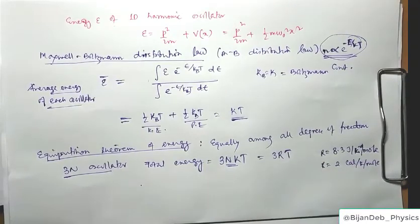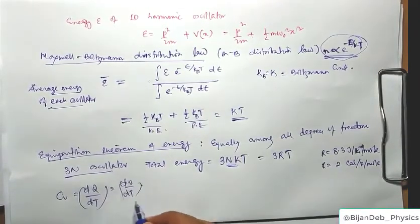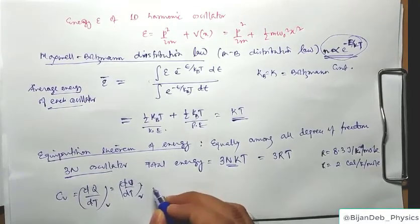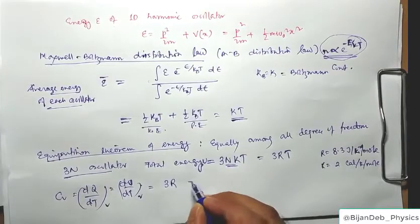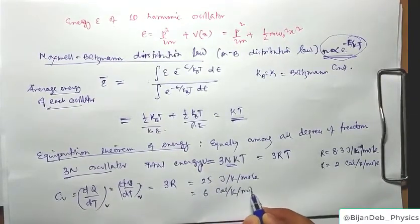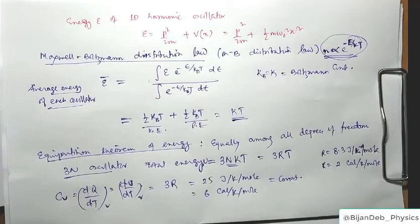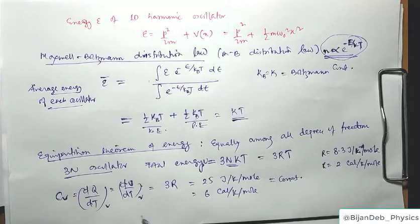The specific heat at constant volume is Cv = dU/dT at constant volume. Since the total energy U = 3RT, differentiating with respect to temperature gives Cv = 3R, which equals approximately 25 joules per kelvin per mole in SI units, or 6 calories per kelvin per mole in CGS. This value is a constant.